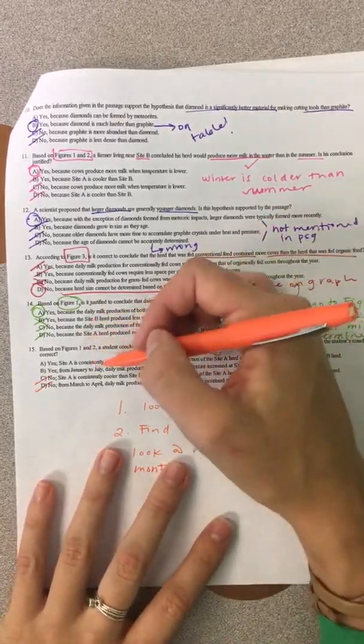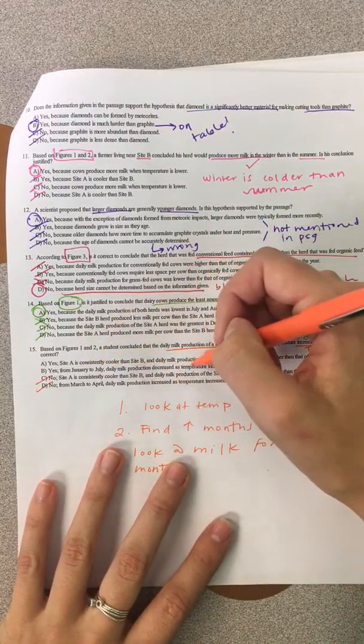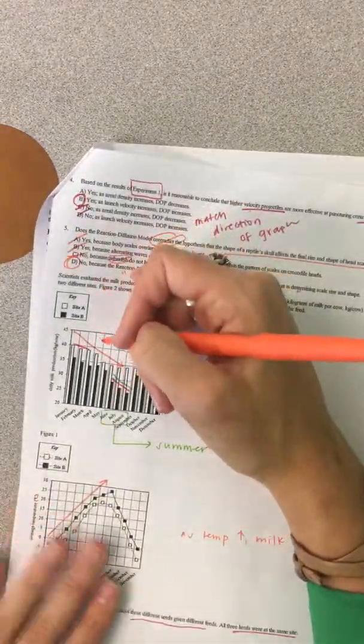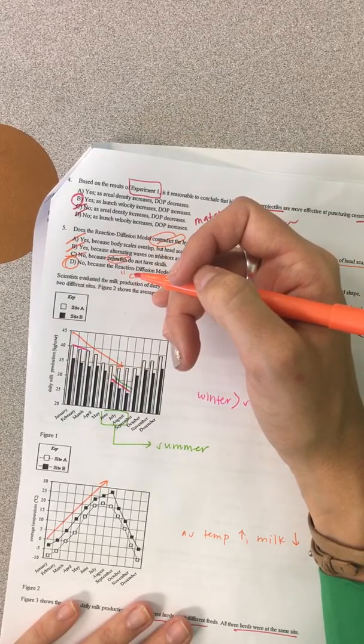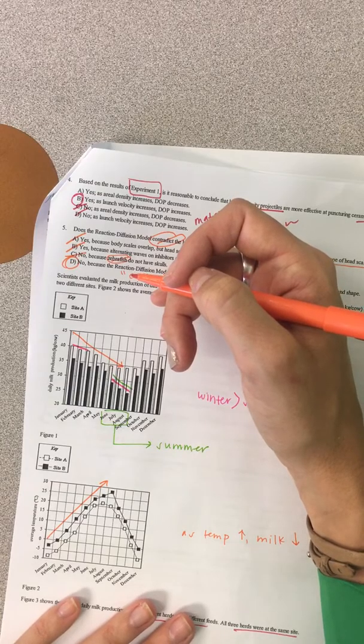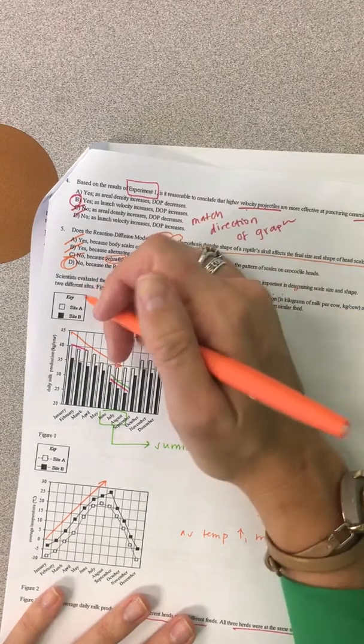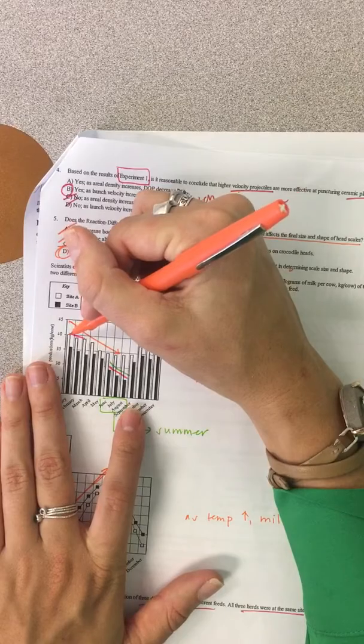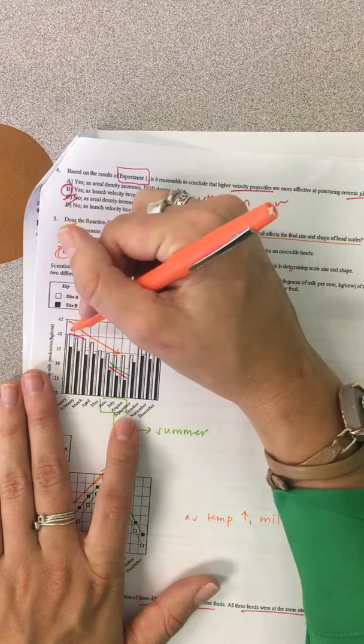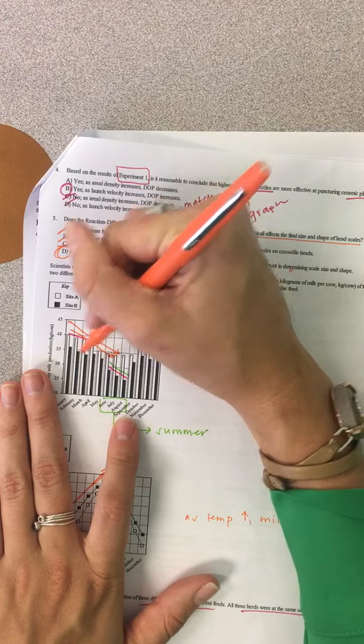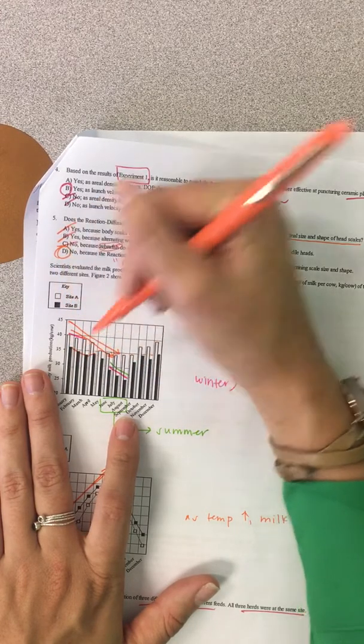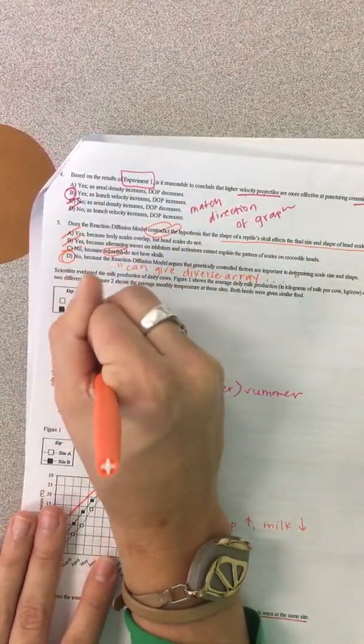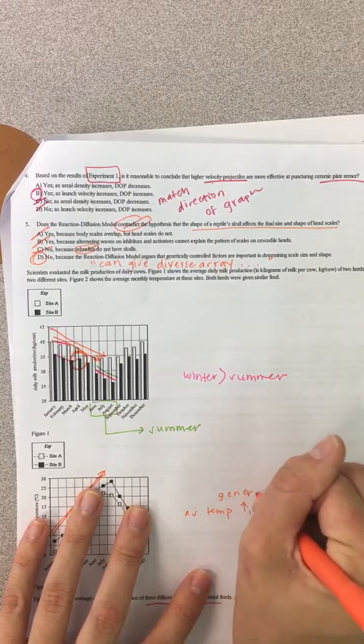For this one. 15. Yes, site A. From January to July, daily milk production decreased as temperature increased at site A. Let's see our answers here. So, but then let's see here. Yeah, so, January to July, the temperature went up at all of the sites and in January to July, it went down at site A, but then it went back up at site B. Oh, so, we do have a little bit of a caveat there. So, this is general, but not always.